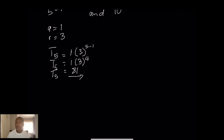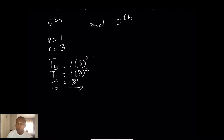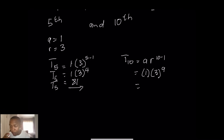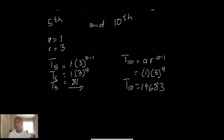And for the tenth term, T10 equals A times R to the power N minus one, so that's 1 times 3 to the power of 9, which gives 19,683. So that would be the tenth term of the sequence.